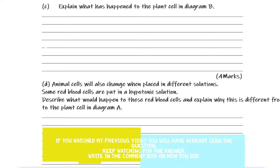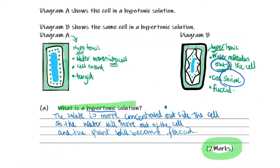Let's recap the two diagrams. Diagram A shows a cell in a hypotonic solution and Diagram B shows a cell in a hypertonic solution. Here we have Diagram A, which is hypotonic. All key factors associated with hypotonic are that water moves into the cell, the cell can then expand and become turgid.